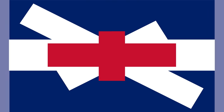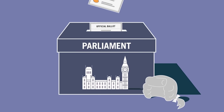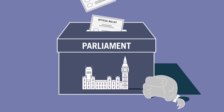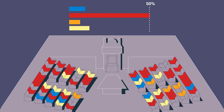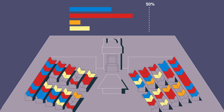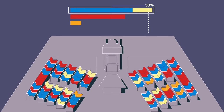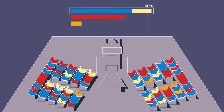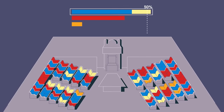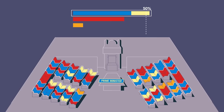Meanwhile, in parliamentary democracies like the United Kingdom, people only vote for members of their legislature, called members of parliament. If a majority of the legislators belong to a single party, or if multiple parties join together to form a ruling coalition, then they appoint one member of parliament from within their party or coalition to become prime minister, the leader of the country.